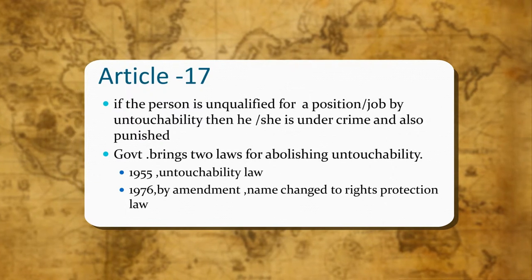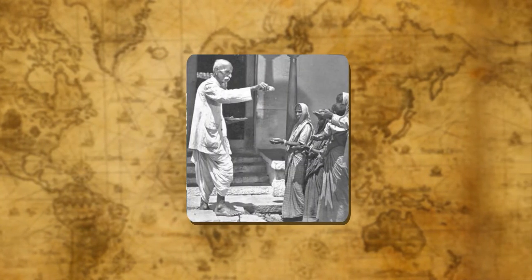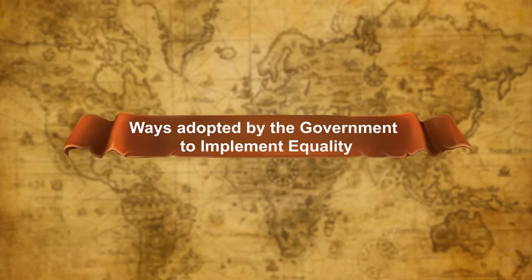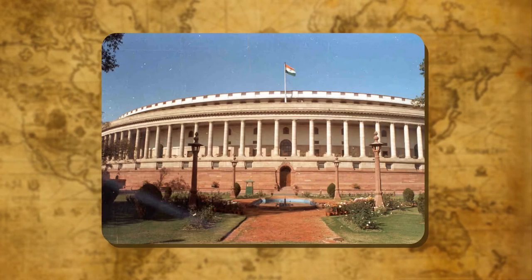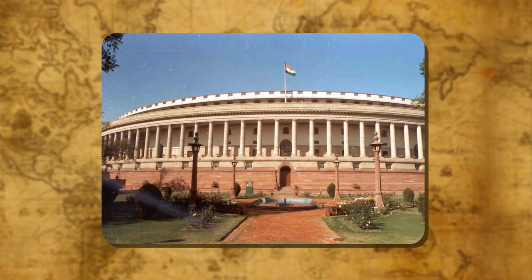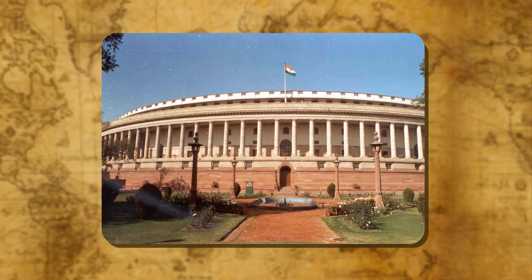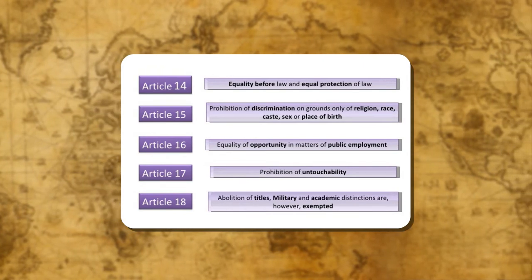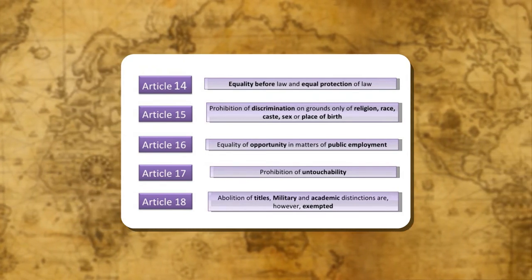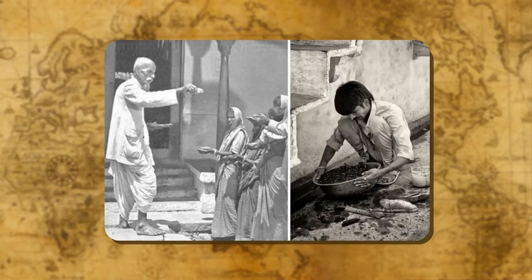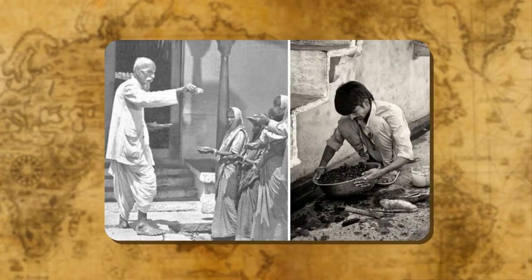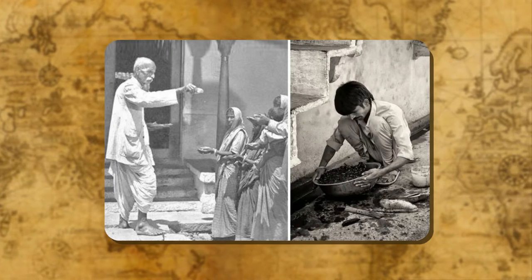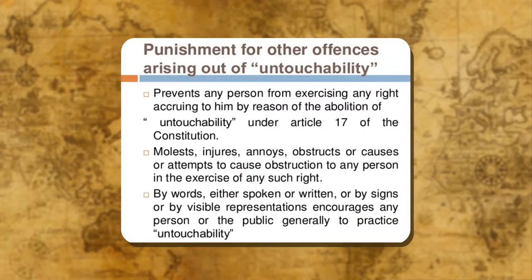Article 17: Untouchability has been abolished and its practice in any form is forbidden. The government has adopted two measures to implement the equality guaranteed in the Constitution. First, making laws: the government has made many laws to protect people from inequality. For example, according to the Untouchability Act, no person can discriminate against any other person on the basis of caste. If any person is found doing so, it will be a punishable act.